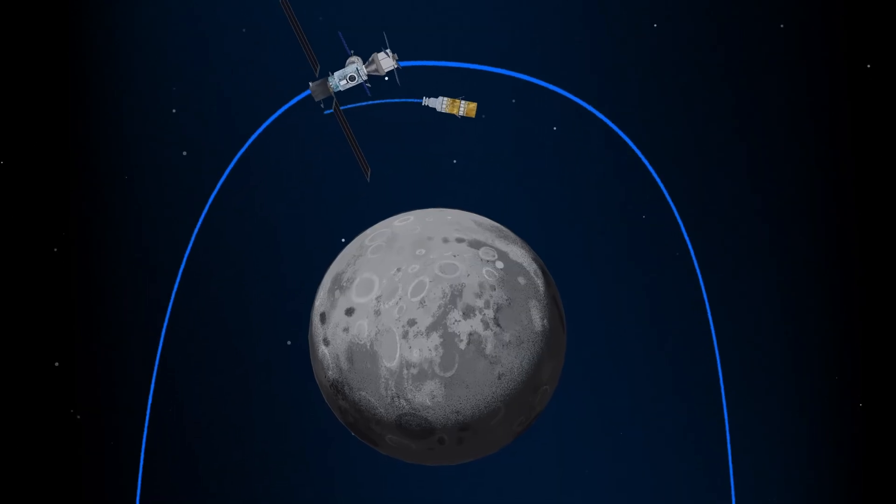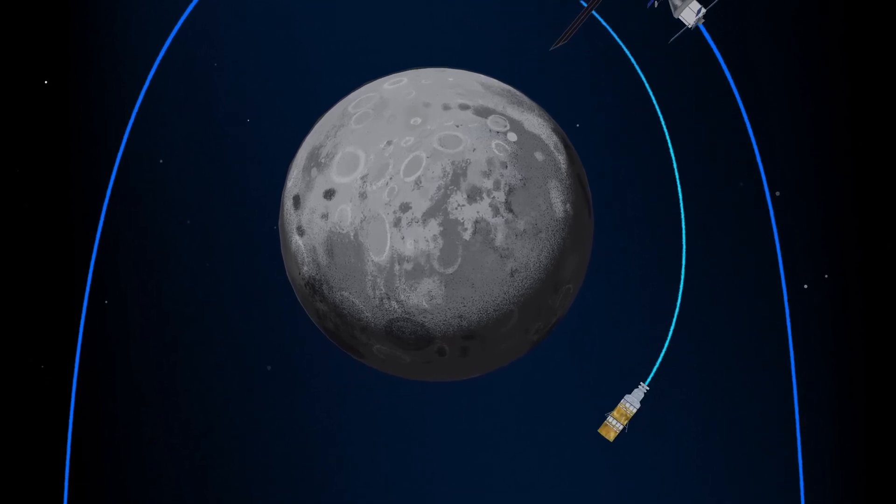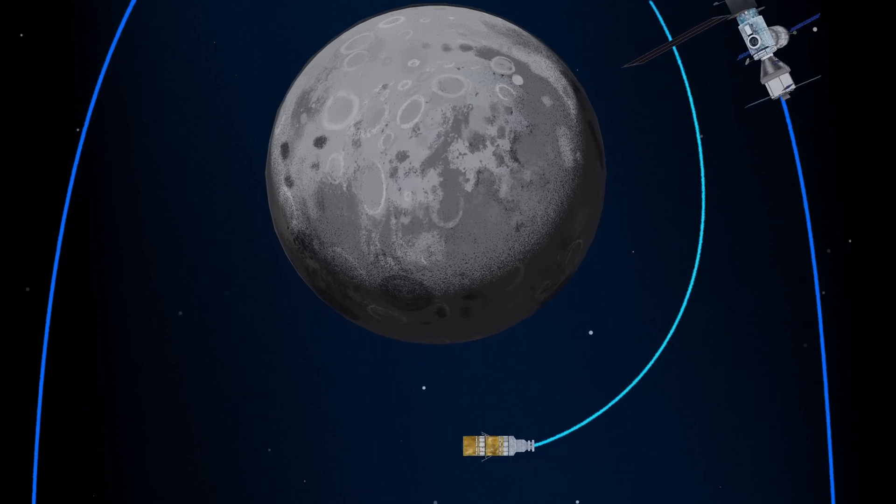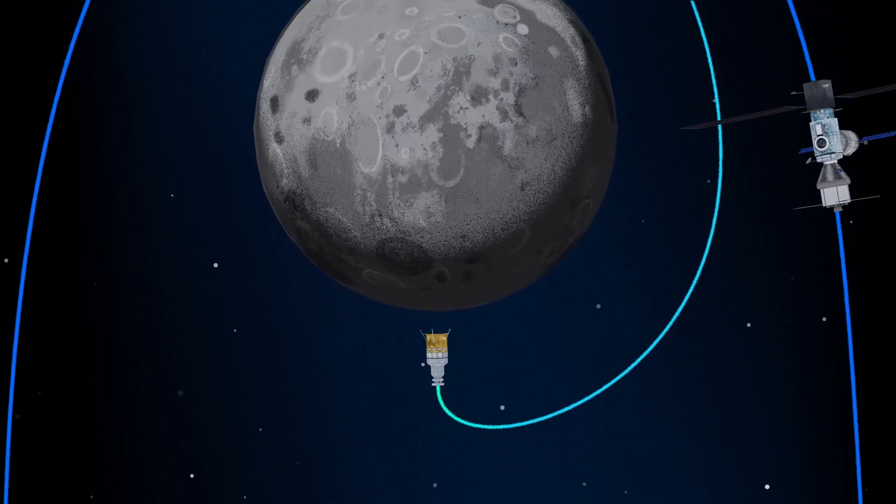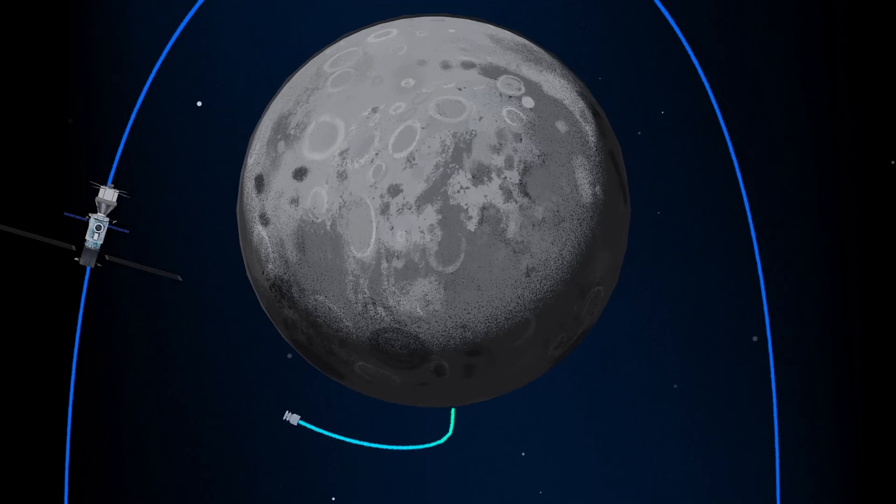The lunar lander system itself is built for three unique steps: descending from the halo orbit of Gateway down to a low lunar orbit, descending from low lunar orbit to the surface, and once the lunar mission is complete, launching from the surface of the Moon and ascending all the way back to the orbiting Gateway.